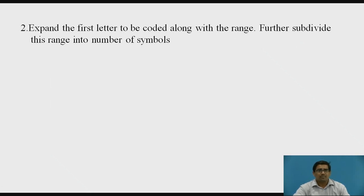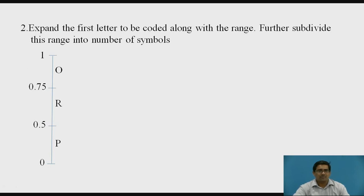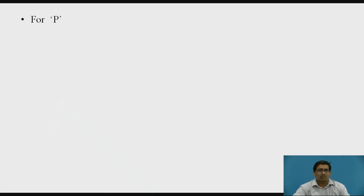Now, second rule: expand the first letter to be coded along with the range, and further subdivide this range into the number of symbols. We want to do this one by one. We have calculated the first division previously. According to the second rule, we again want to subdivide the P symbol. Before dividing the P symbol, there is a mathematical formulation we need to see.